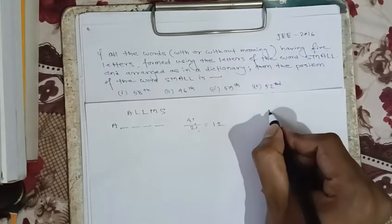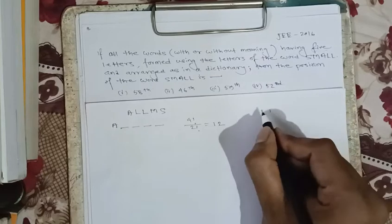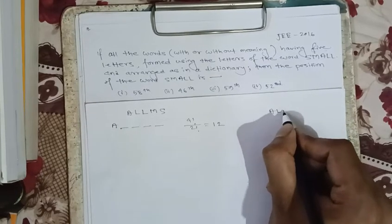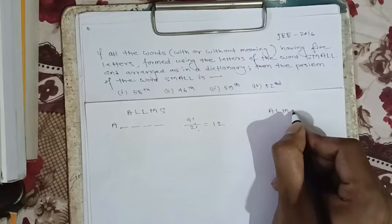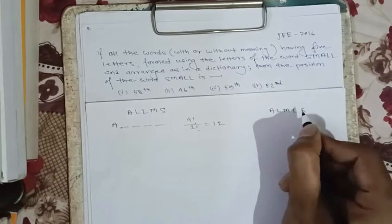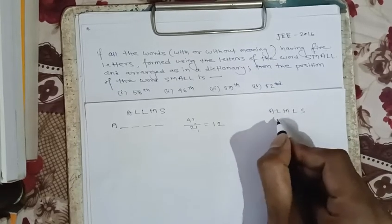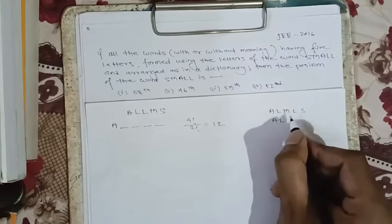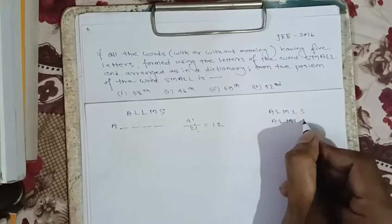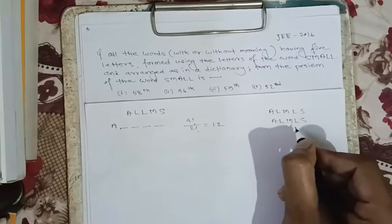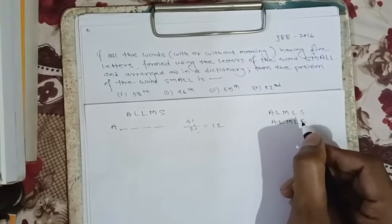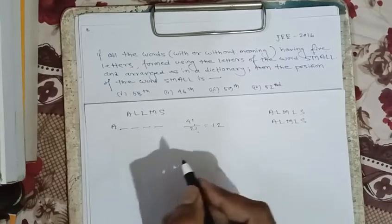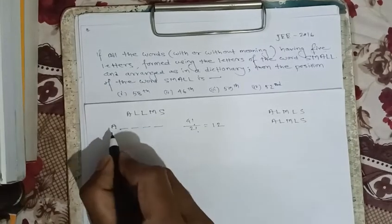To explain why we divide by 2 factorial: when we arrange the two l's — for example, in the word a, l, m, l, s — swapping the two l's gives the same word. So those two words are identical, and for this reason we divide by 2 factorial.